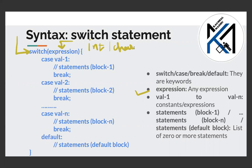In the body of the switch, we put case value 1, case value 2, up to case value n — a total of n cases. The keyword 'case' is used, followed by a constant or expression value. These constants are compared with the switch expression.